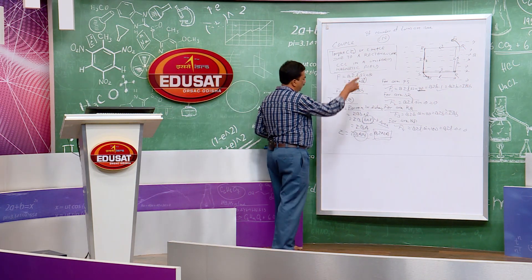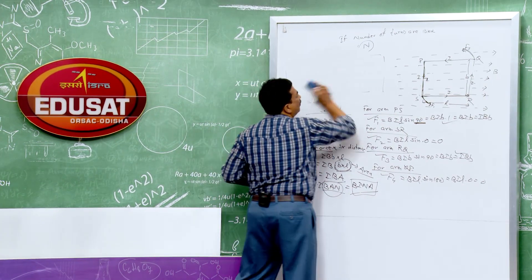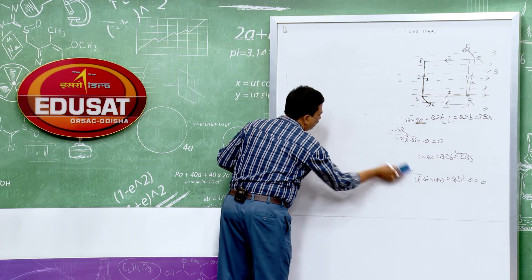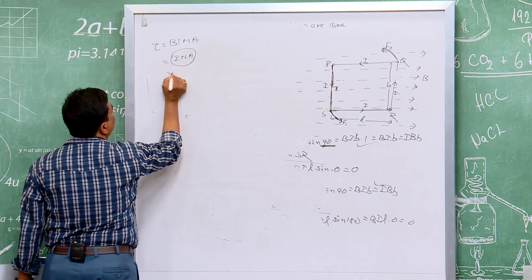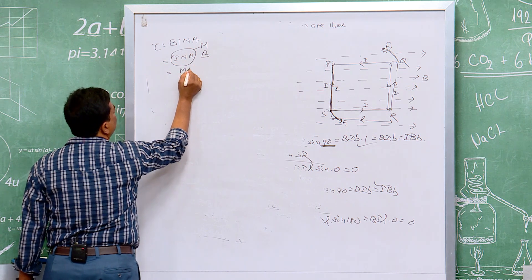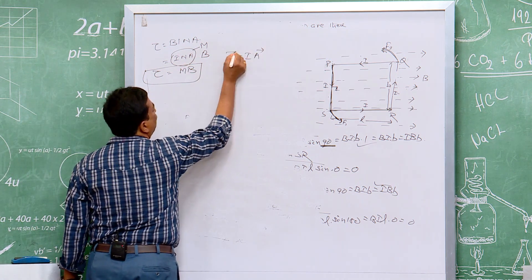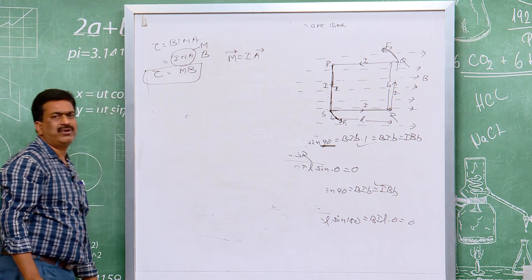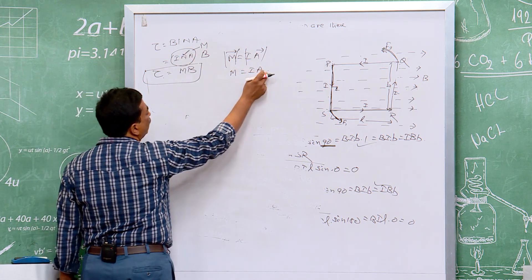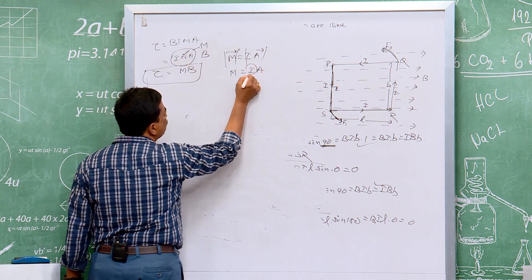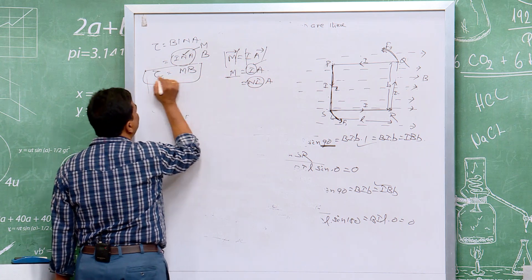This torque τ = BINA can also be expressed in terms of the magnetic dipole moment. Since INA = M (the magnetic dipole moment), τ = MB, or τ = M·B. In vector form, M⃗ = IA⃗, and for N turns the total current contribution gives M = NIA, so τ = MB.